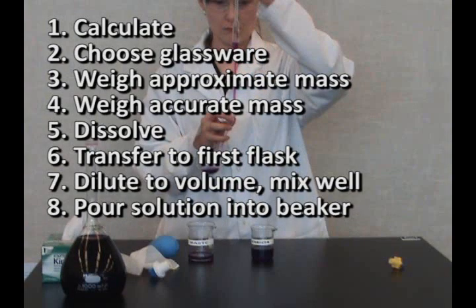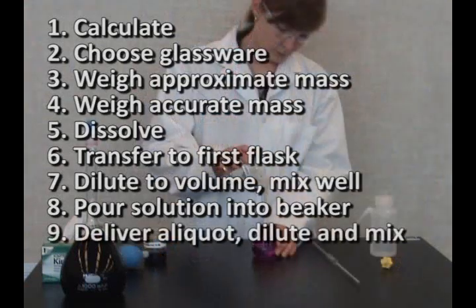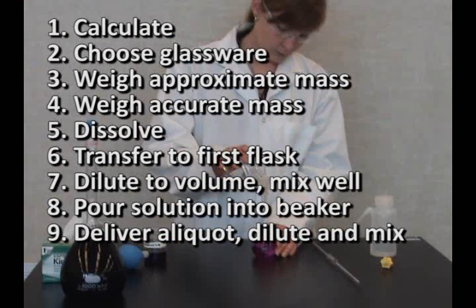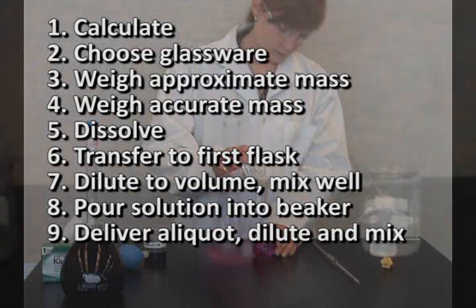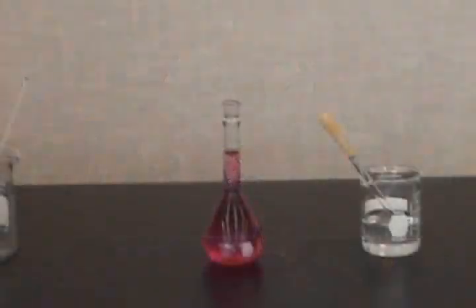Pour some solution into beaker. Take aliquot into pipette, add to second flask, dilute to volume, invert and mix. Now you have your 10 part per million manganese solution.